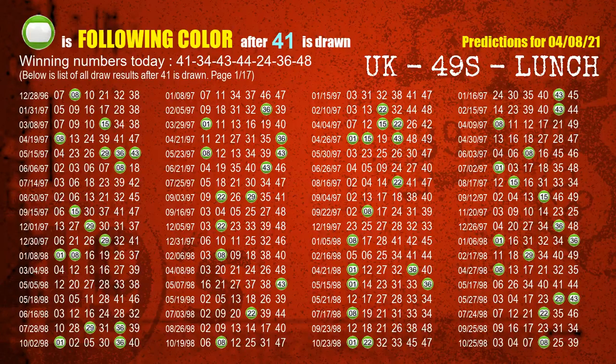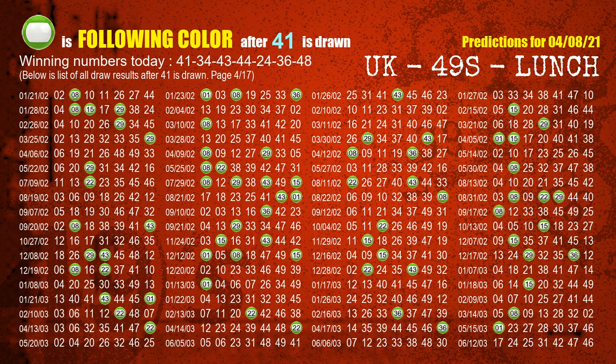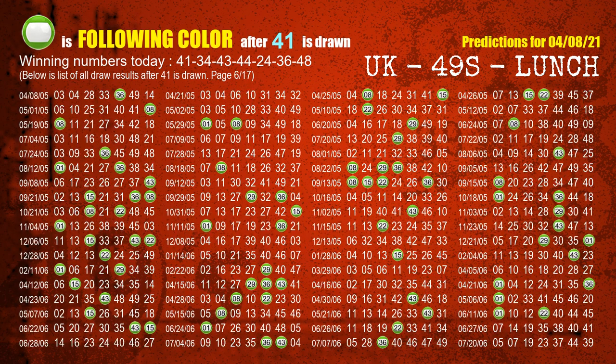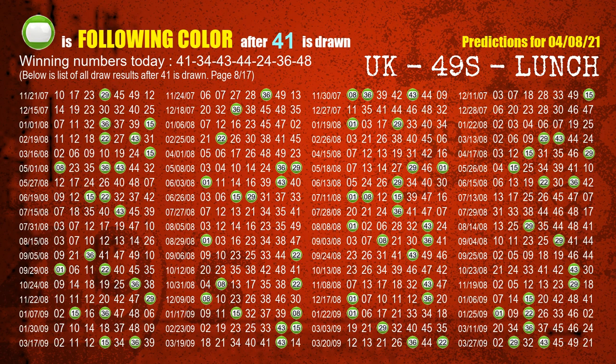Following ball colors refer to the color of those numbers being picked on the next draw after this one. The first winning number is 41. We list all draw results which are after a draw with 41 as a winning number. The most frequently following color is green when 41 is the winning number in the last draw. We highlight the color green with a color ball image for you.